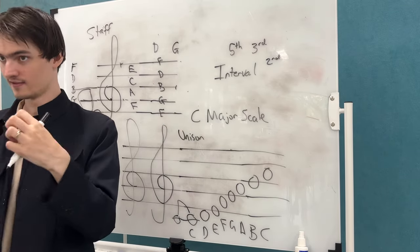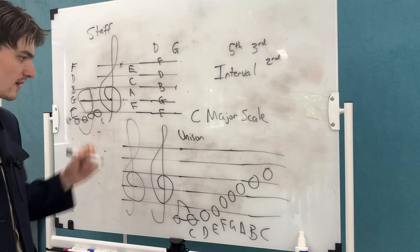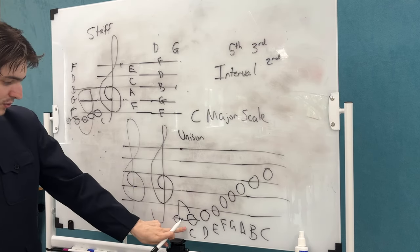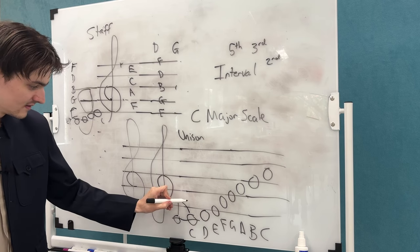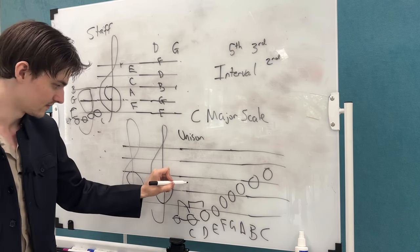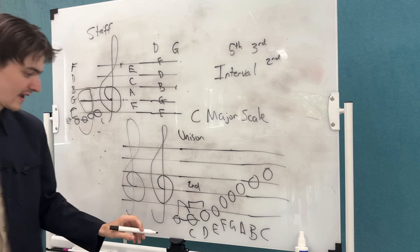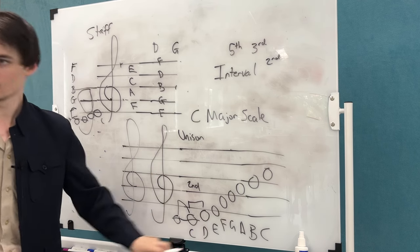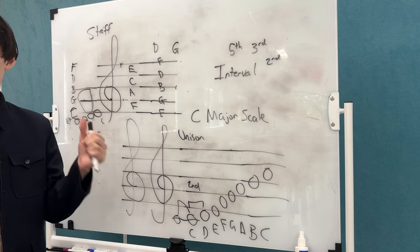But the interval between a C and a C is what we call a one, or the actual word for it is a unison. They're united, right, together as a one, as a unison. However, the interval between C and D is called a second. Because you're going to count C, D.